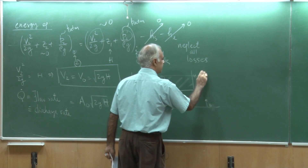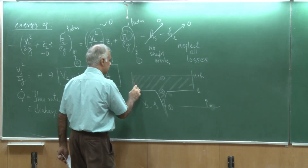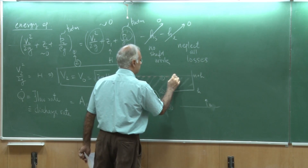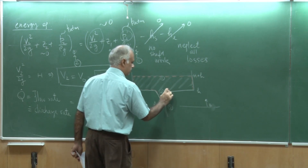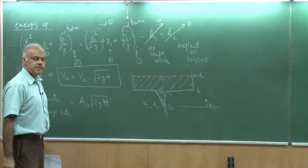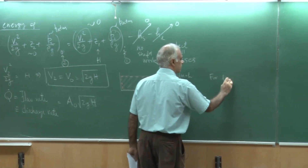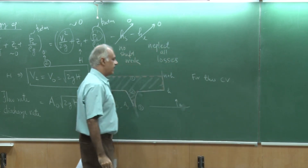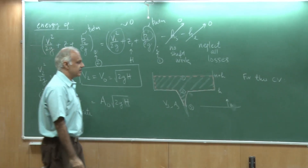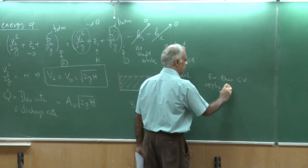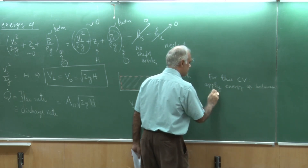This becomes h and this is H plus h, and this time let me take this as the control volume. For this control volume, I can apply the same equation between ports 1 and 3. So, apply the energy equation between 1 and 3.